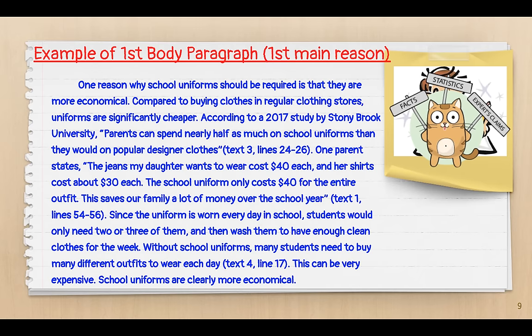The first body paragraph is all about my first main reason — economical. Topic sentence: 'Compared to buying clothes in regular clothing stores, uniforms are significantly cheaper.' According to a 2017 study by Stony Brook University, parents can spend nearly half as much on school uniforms than on popular designer clothes. One parent states the jeans her daughter wants cost $40 each and shirts about $30 each, while the school uniform costs $40 for the entire outfit. Since the uniform is worn every day, students only need two or three of them. School uniforms are clearly more economical.